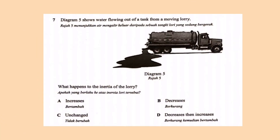Now, to help you understand inertia, let's answer some questions together. The first question shows water flowing out of a tank from a moving lorry, and it asks what happens to the inertia of the lorry. Since water is flowing out of the tank, the mass of the lorry would decrease. As we all know, the bigger the mass, the higher the inertia. So if the mass decreases, the inertia would also decrease. Therefore, the answer is B.